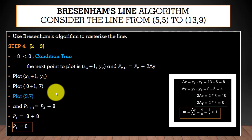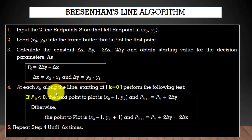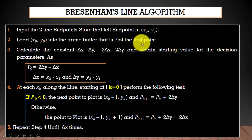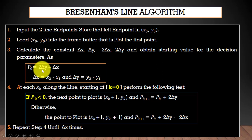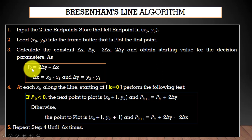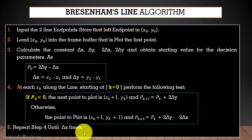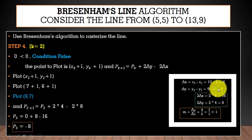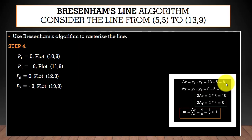So that's all about this video. To summarize: first we input the two endpoints, then we initialize and plot the first point, then calculate p₀ using 2Δy − Δx (requiring Δx and Δy). Then we check whether p_k is less than, equal to, or greater than zero and plot accordingly, repeating until Δx times. In this example, Δx = 8, so we repeated the algorithm for 8 points — from p₀ to p₇. If you have any questions, comment below. Thanks for watching.